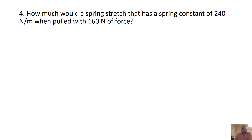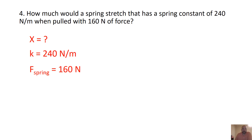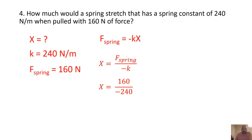How much would a spring stretch that has a spring constant of 240 N/m when pulled with 160 newtons of force? We're solving for displacement x, given K = 240 N/m and F = 160 N. Rearranging the spring constant equation for x and plugging in our values gives a displacement of negative 0.67 meters — the spring stretches approximately 0.67 meters backwards from the equilibrium position.